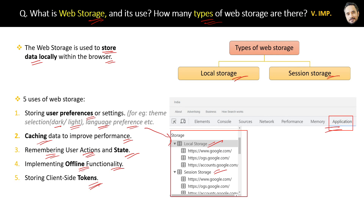The last benefit is storing client-side tokens. Nowadays, web APIs are using tokens to authenticate client requests, and developers use web storage for storing those client-side tokens as well. Now you have a good idea about web storage.